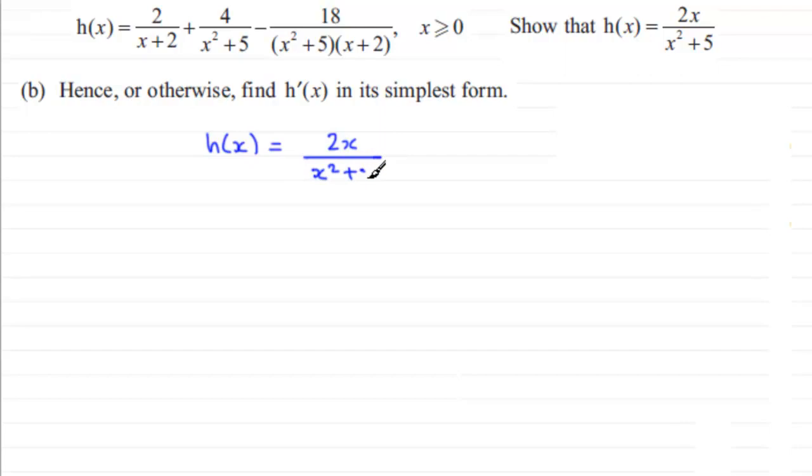Now if we're to differentiate this, if we're to find h prime of x, I've got two options here. I could bring up the x squared plus 5 and write 2x multiplied by x squared plus 5 all to the power minus 1.